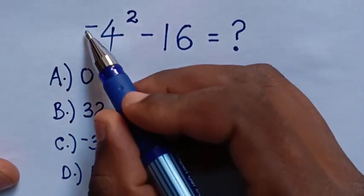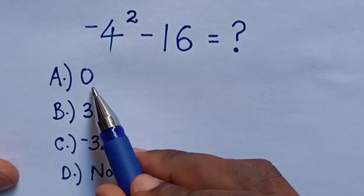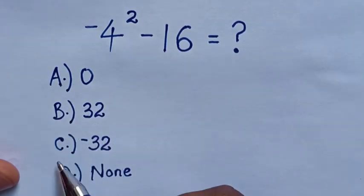Hello, how to solve negative 4 square minus 16 by selecting the answers in A, 0, B, 32, C, negative 32, D, none.